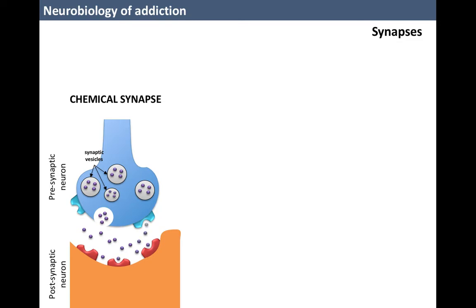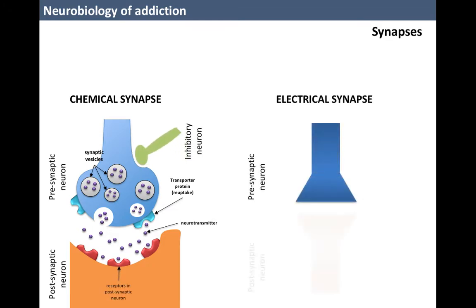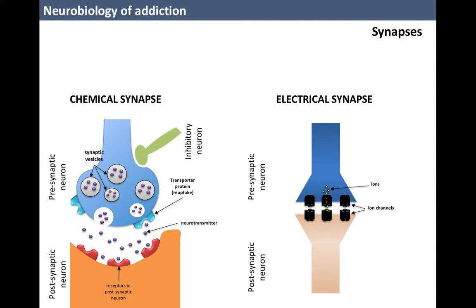The most common synapses are chemical, although there are also electrical synapses. Both types have three common elements: the presynaptic neuron, the synaptic cleft or space, and the postsynaptic neuron.